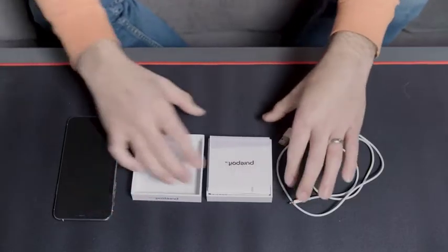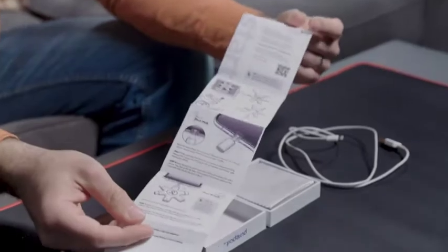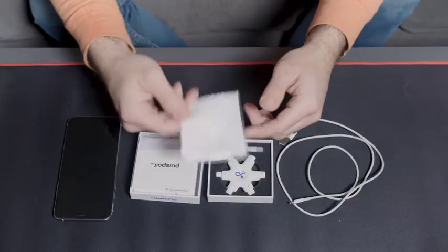Okay let's see what's inside the box here. So first we have the instruction manual, a microfiber cloth, some cleaning solution and the Pureport itself.